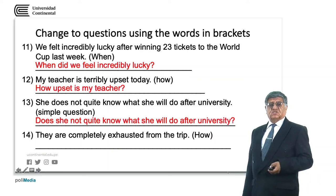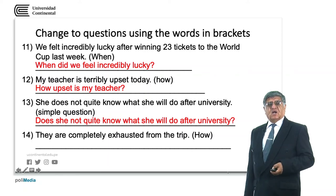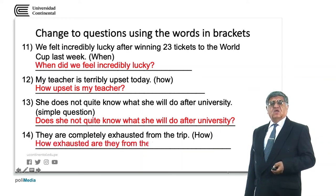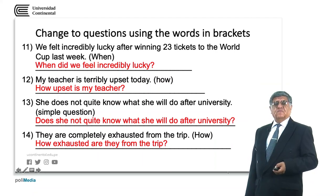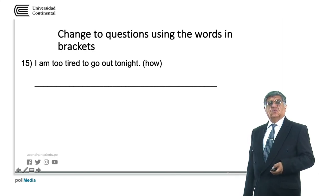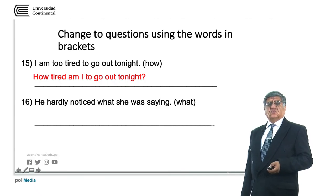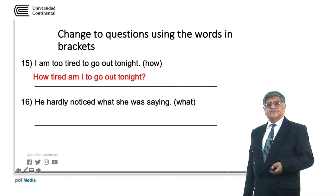Does she not quite know what she will do after university? Remember, we have explained this in previous lessons. They are completely exhausted from the trip — how exhausted are they from the trip? Or how are they from the trip? I am too tired to go out tonight — how tired am I to go out tonight? Remember, we are not making dialogues, we are doing grammar. He hardly noticed what she was saying.